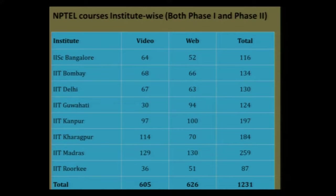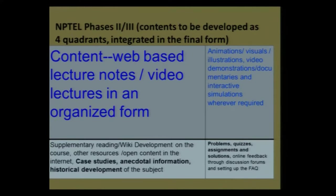Most courses are on the web or on the server, and some are being reviewed. NPTEL courses were designed to have four quadrants. The first quadrant is the content — the basic subject matter. The second quadrant is animations, visuals, illustrations, and video clips. The third quadrant is supplementary reading, websites, and resources the student would be guided to. The fourth quadrant is problems, quizzes, and assignments embedded within the courses. Each course has all four components — not just an e-book or video lecture, but all quadrants together.